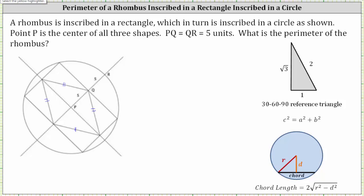Next, we were given the length of segment PQ. This segment has a length of five units. The length of segment QR also has a length of five units. This tells us the radius of the circle is equal to five plus five, or 10 units. The radius equals 10 units.